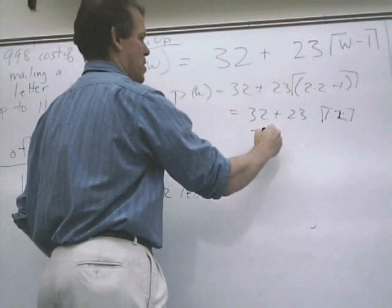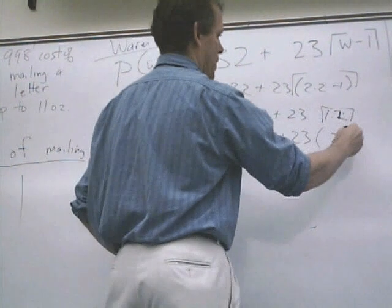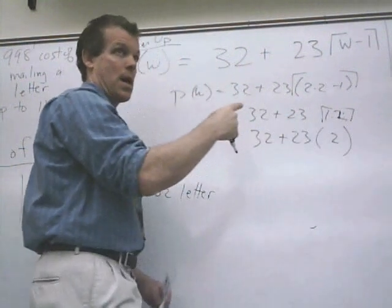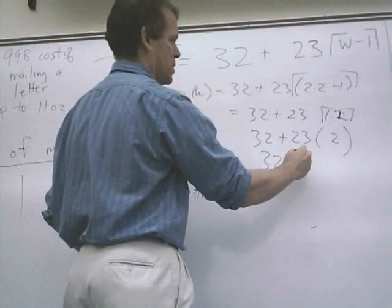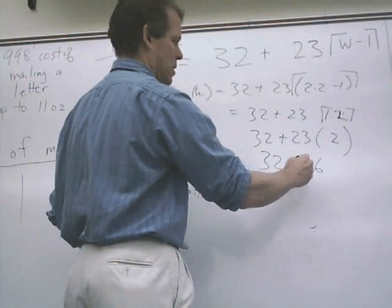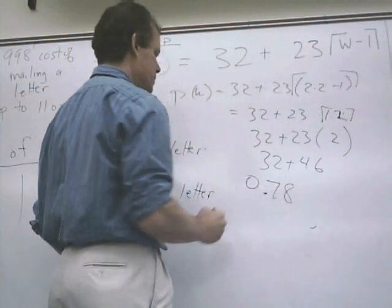So that's 32 plus 23 times 2. And then I'll take out the round-up sign, because I'm done with it, and I'll put it in parentheses. And I get 32 plus 46. 78. 78 cents.